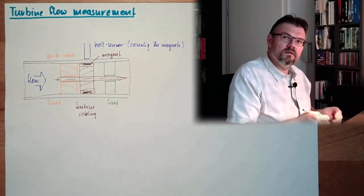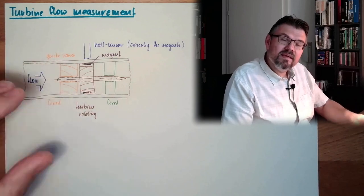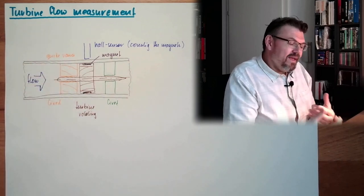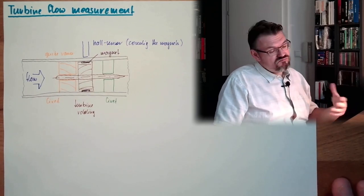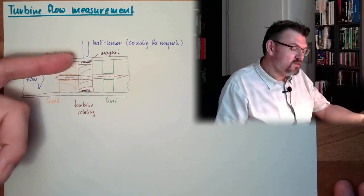This is counting the magnets. That's it. So there is no opening, really, inside the tube. The measurement itself is contactless.